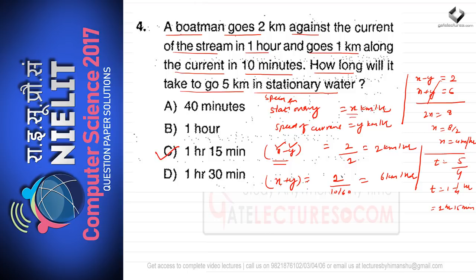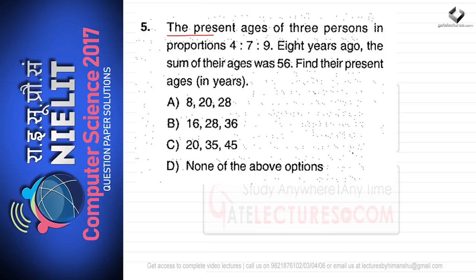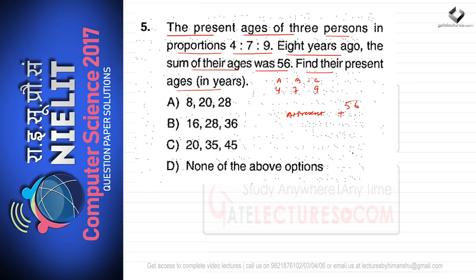The next question: the present ages of three persons are in the proportion 4:7:9. Eight years ago the sum of their ages was 56. At present, the sum of their ages is 56 + (8×3) = 56 + 24 = 80 years. The proportion 4:7:9 adds up to 20 units, and 20 units represent 80 years.